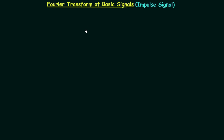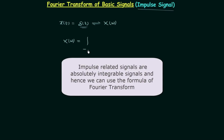In the last presentation we calculated the Fourier transform of a DC value, and now in this presentation we will obtain the Fourier transform of the impulse signal. We have the time domain signal x(t) = δ(t), the unit impulse signal, and we are interested in finding its Fourier transform using the formula: X(ω) = integration from minus infinity to infinity of x(t) multiplied by e^(−jωt) dt.